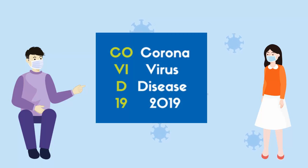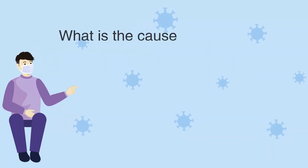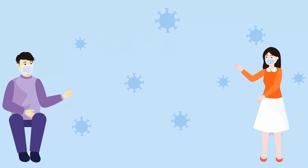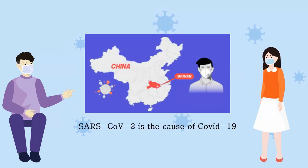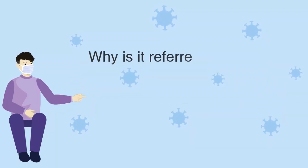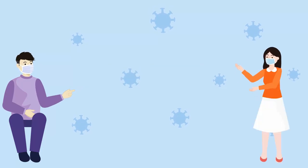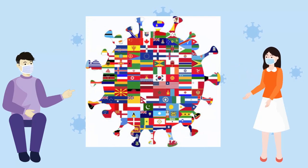What is the cause of COVID-19? The COVID-19 disease is caused by a virus that was first reported in December 2019 in Wuhan, China. And why is it referred to as a pandemic? They call it a pandemic when a disease spreads across the world, infecting a large number of people across countries and continents.